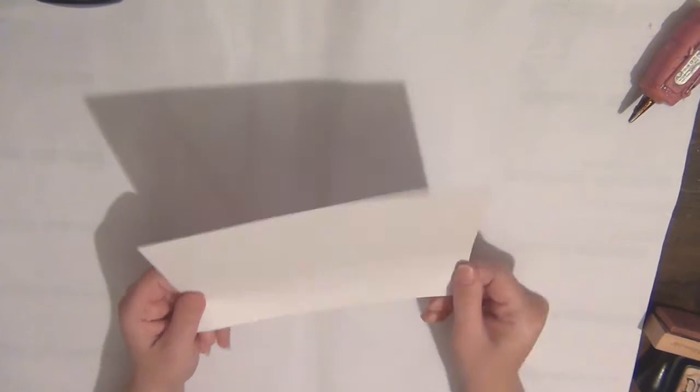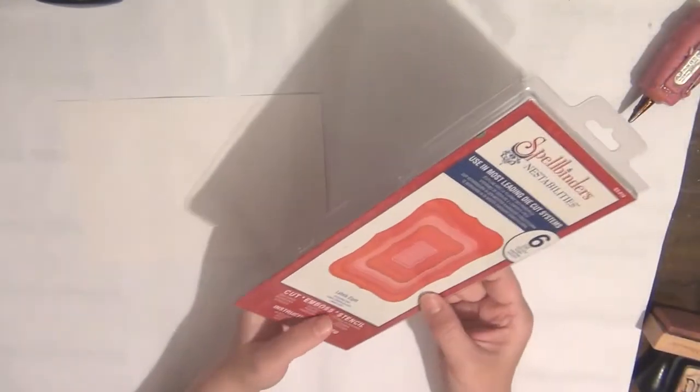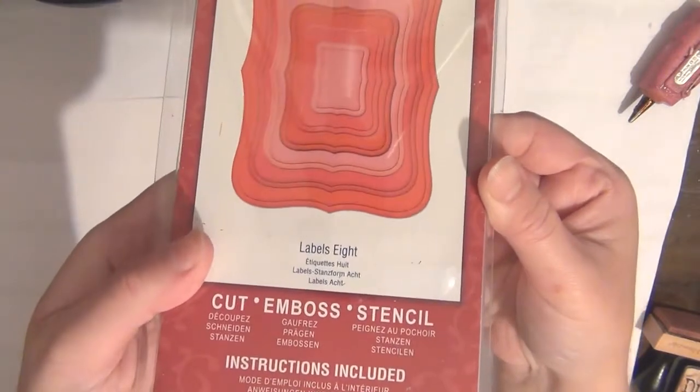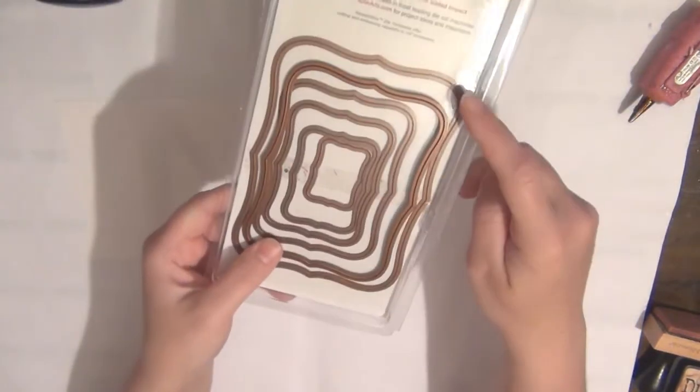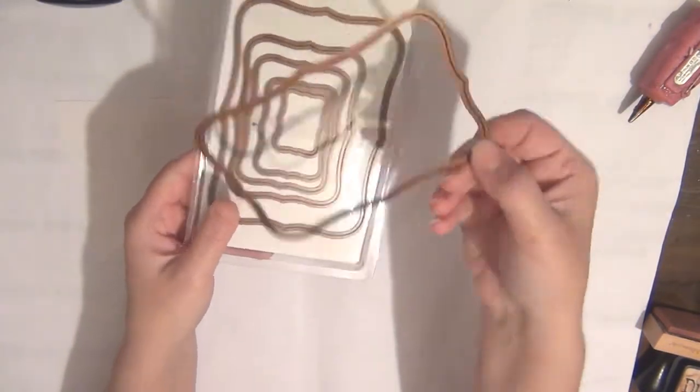Okay, so for this tutorial you're going to need some cardstock and also some dies. I'm going to be using this Labels 8 by Spellbinders, but you can use any shapes you have.